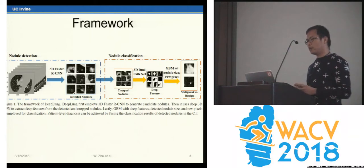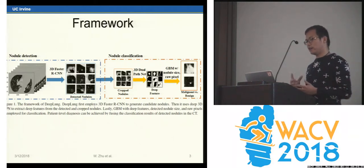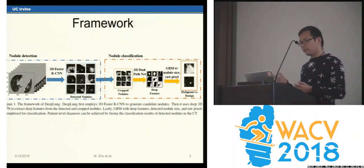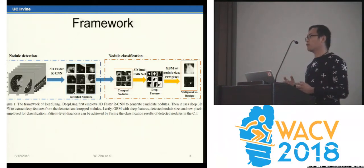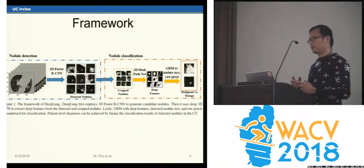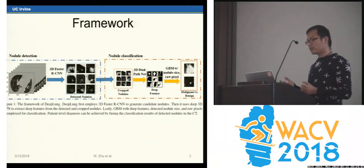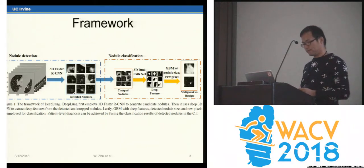After that, we use a three-dimensional dual path network to extract features for the detected nodule. Then we use gradient boosting machine with the detected nodule size and the raw pixels for nodule classification.